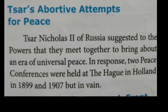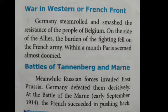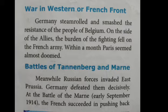Russia joined the Allied Powers and entered the war. War in the western front — or French front. The eastern front is the Russian front. Germany smashed the resistance of Belgium. On the side of the Allies, it was the duty of the French army to fight against the Central Powers.